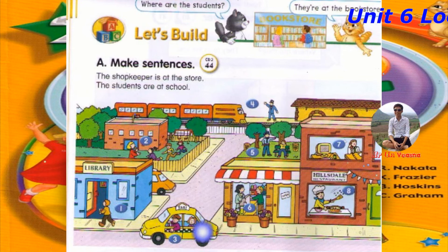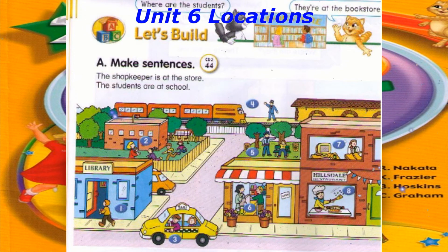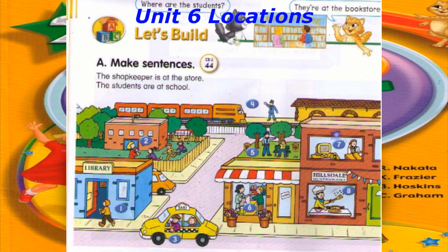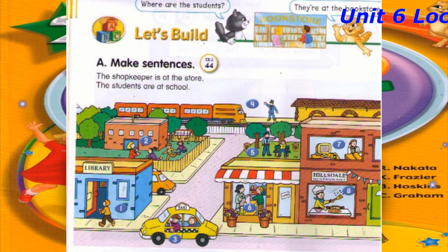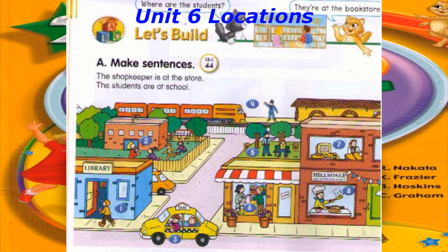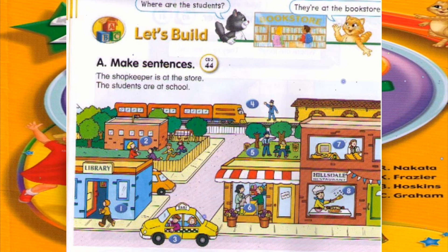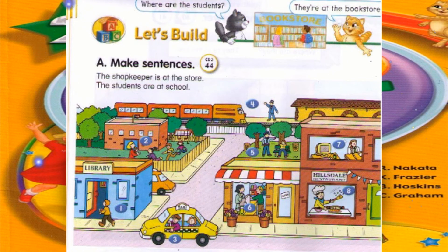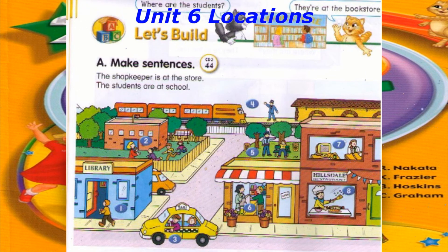Track 44. Let's build. A. Make sentences. The shopkeeper is at the store. The students are at school. Number 1: The student is at the library. Number 2: The teacher is at school. Number 3: The taxi driver is in the taxi. Number 4: The train conductor is next to the train. Number 5: The police officer is at the park. Number 6: The shopkeeper is at the store.